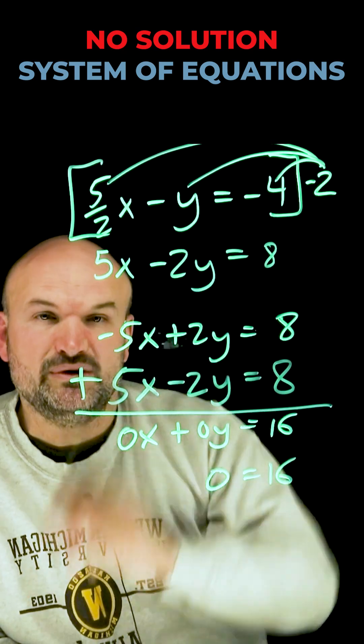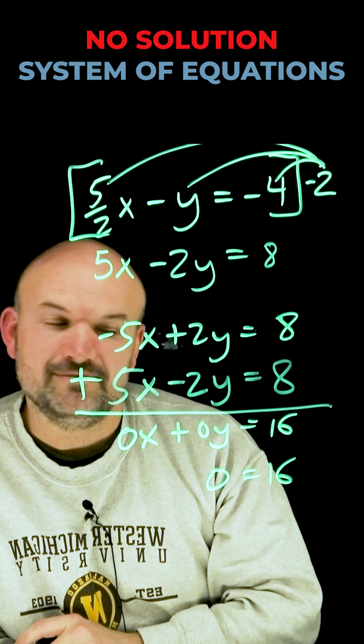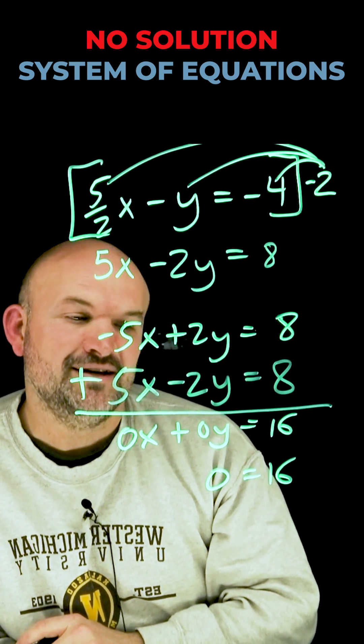So therefore this is an example of a system of equations that has no solution, meaning the two equations of the line are never going to cross.